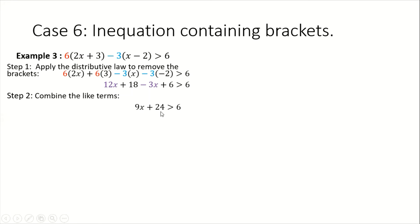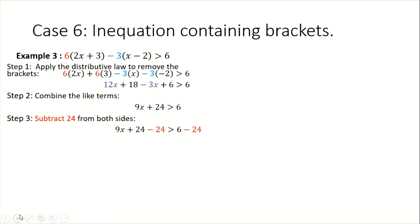At this stage we have constant terms on both sides, but we want the constant term to be only on one side. So we transfer the positive 24 to the right-hand side by subtracting 24 from both sides. We state this as 9x plus 24 minus 24 greater than 6 minus 24. When we simplify, we end up with 9x greater than negative 18.